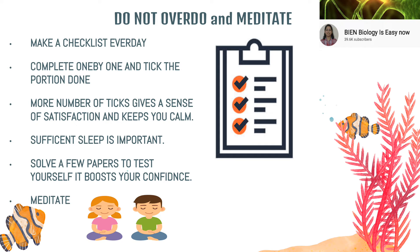Do not overdo things. Make a checklist every day — after breakfast, write down what you plan to cover, for example topics in the circulatory system or maybe two chapters. Complete all tasks one by one and tick the portions done. The more ticks you see on your to-do list, the more satisfaction and calm you will feel, knowing how much you have accomplished.